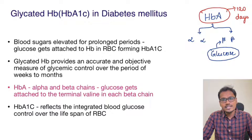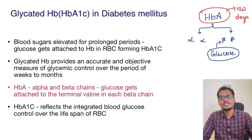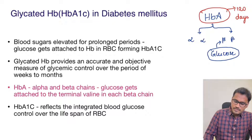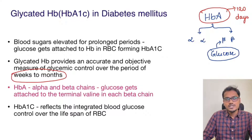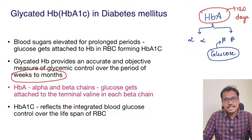Now let's understand why this is important. It is very important because a patient who is going to give a blood test for diabetes is likely to cut down calories for the last few days. So the values might be misleading, but HbA1c gives an overall estimate of glucose level approximately over weeks to months. So this is a better parameter, and we should know where exactly in the beta chain it is getting attached.